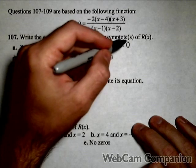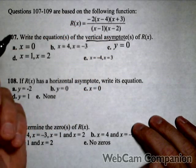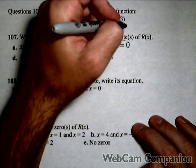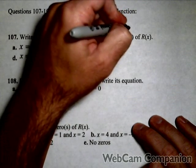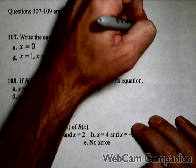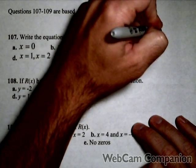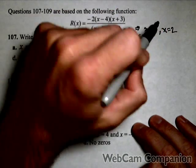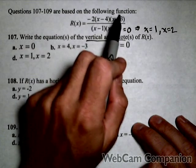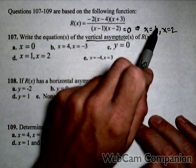First off are the vertical asymptotes. The vertical asymptotes are whatever makes the denominator zero. So we're basically going to set the denominator equal to zero, and we see that that happens at x equals one and x equals two. Now the one thing you want to check is make sure that one and two don't make the numerator zero also, because then you'd have a hole instead of a vertical asymptote.